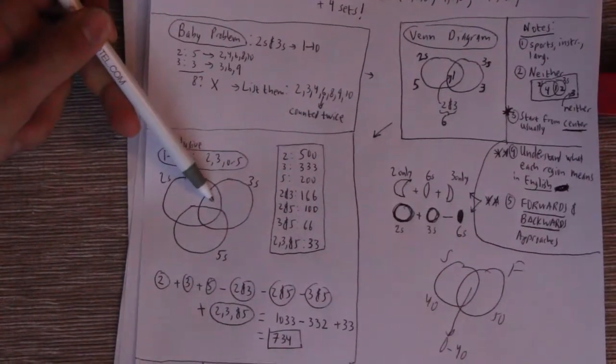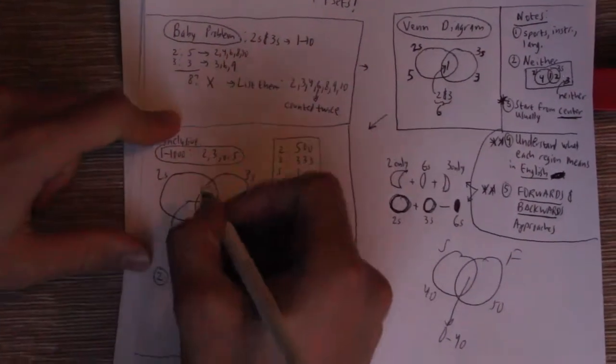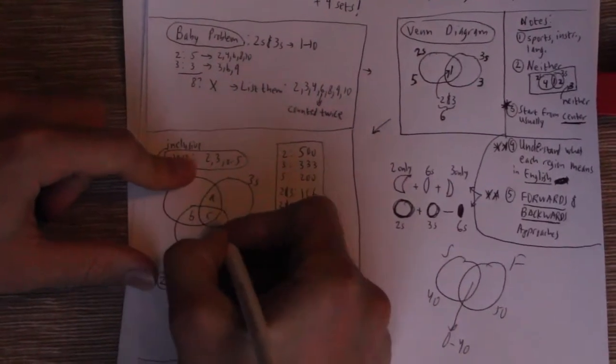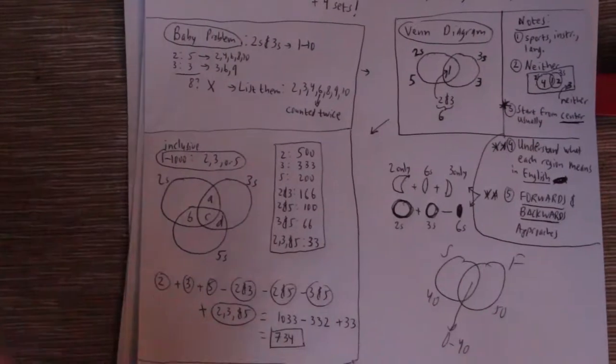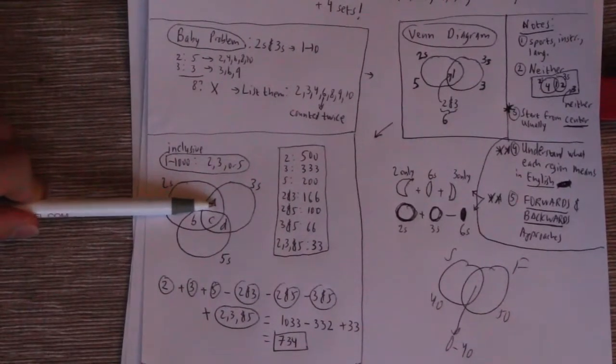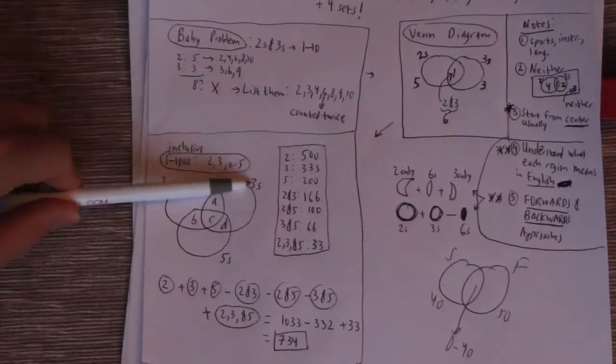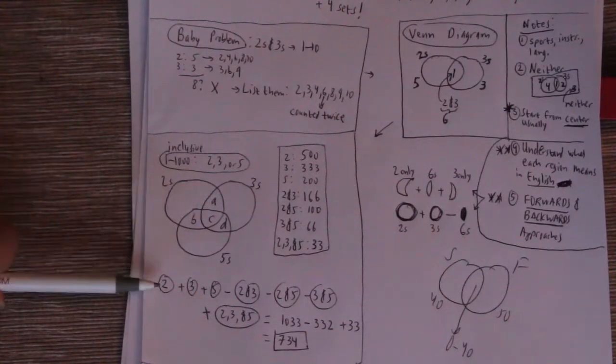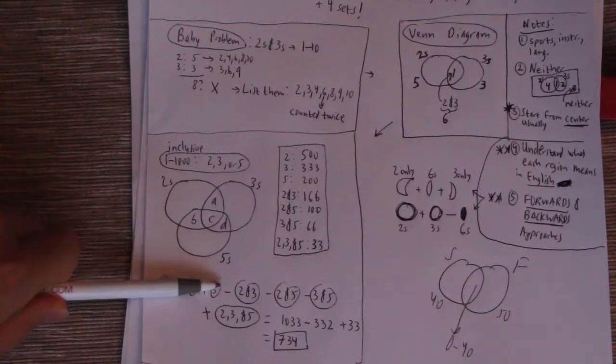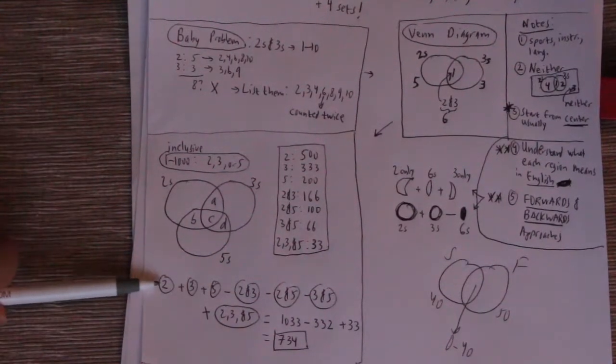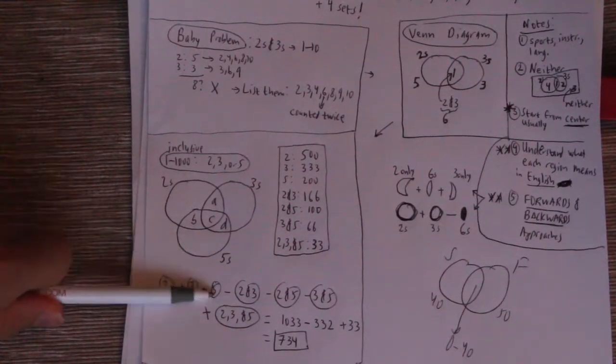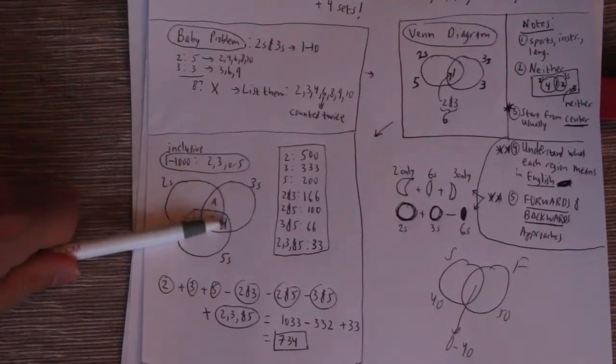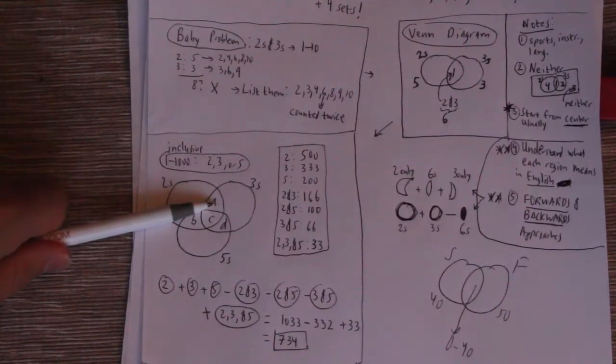So for example, this region right here, which we can label, let's say this is going to be region A, B, C, and D. So region A is going to be counted twice because it's part of circle two and circle three. So that's why we're going to, in here, I just circled the regions we want to add and subtract. So we're going to add the two, we're going to add the three, we're going to add the five, then we're going to subtract the two and three or the sixth region. And that's going to chop off that extra A.